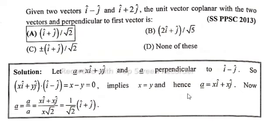So vector a becomes xi plus xj. The absolute value of a equals square root of x squared plus x squared, which can be written as square root of 2x squared. Square and square root cancel, so absolute of a equals x square root of 2.